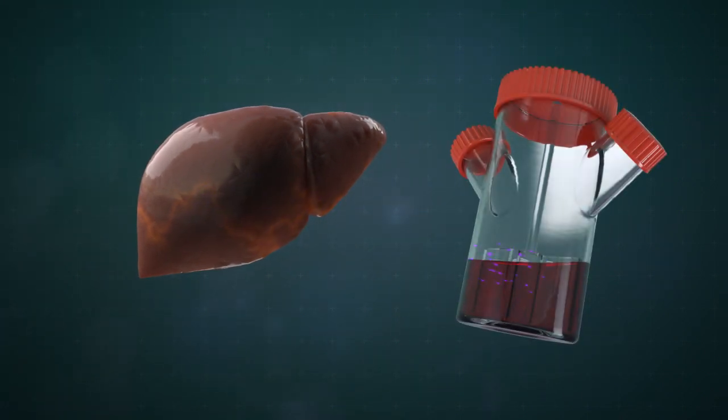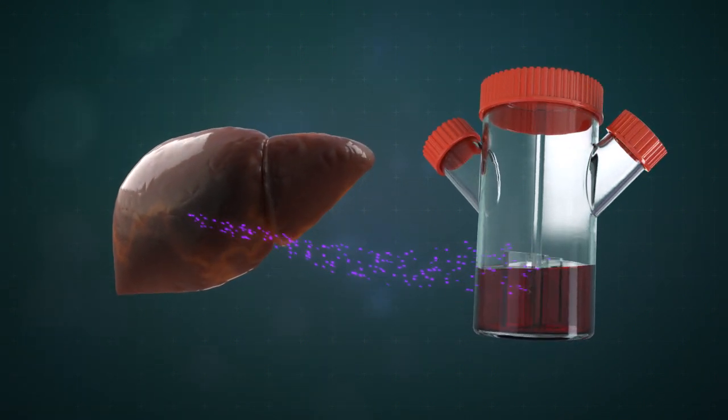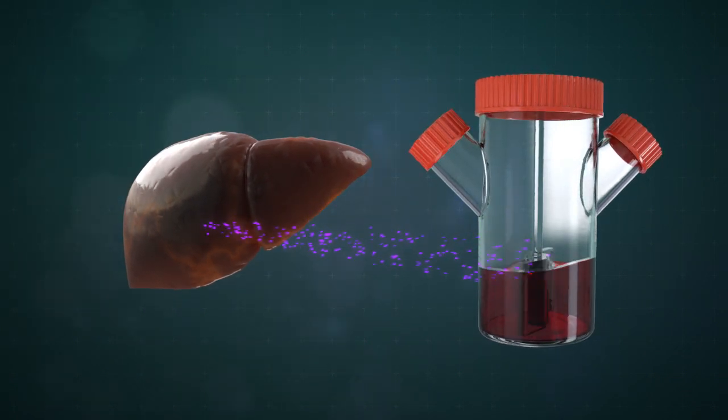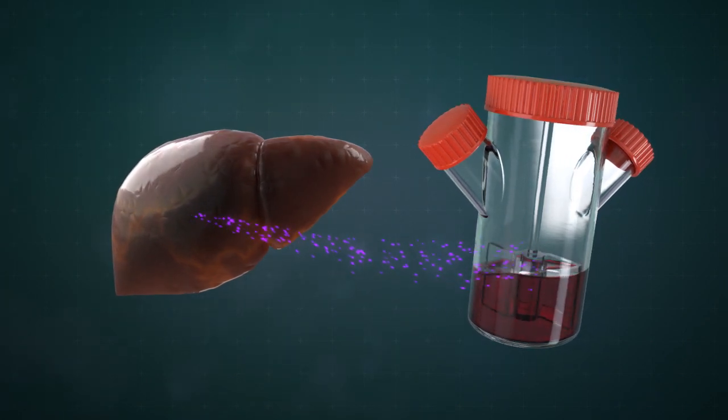In vitro generation of islets from human embryonic stem cells could serve as an alternative. To enable their production, scientists at the Harvard Stem Cell Institute determined how islets form during embryonic development.